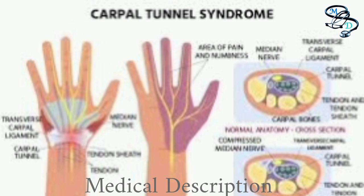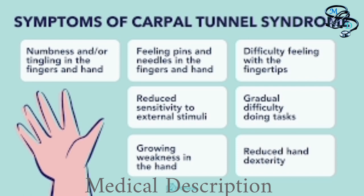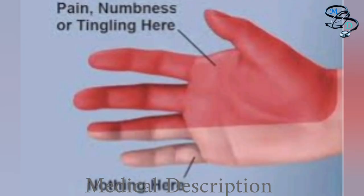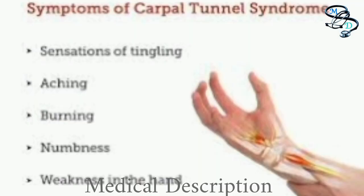Proper treatment usually relieves the tingling and numbness and restores wrist and hand function. Carpal tunnel syndrome symptoms usually start gradually and include tingling or numbness in the fingers or hand — usually the thumb, index, middle, or ring fingers are affected, but not the little finger. You might feel a sensation like an electric shock in these fingers, and the sensation may travel from the wrist up the arm.